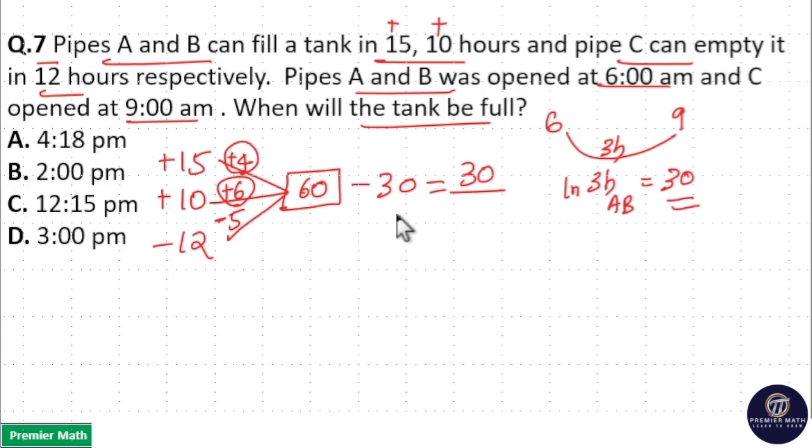This should be filled by A, B, and C. In 1 hour, A and B fill 10 liters but C empties 5 liters. So in 1 hour, total filling is 6 plus 4 minus 5, which is 5 liters.